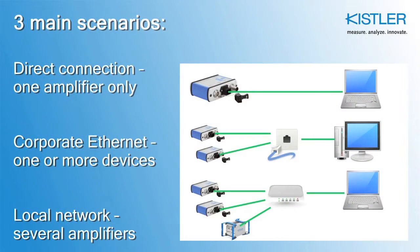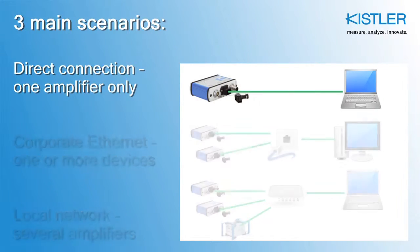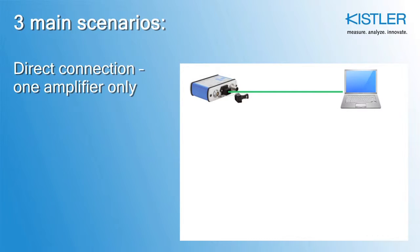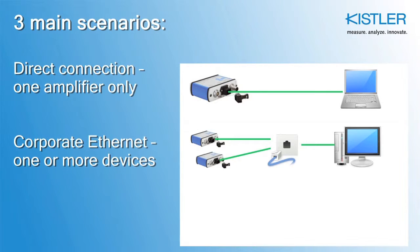Here we define three main scenarios to establish communication between your amplifier and computer. The first: you want to access just one amplifier and connect it directly to your computer. The second: you want to use one or several amplifiers by connecting them to a corporate Ethernet network for simultaneous monitoring of several sensors from a control room.